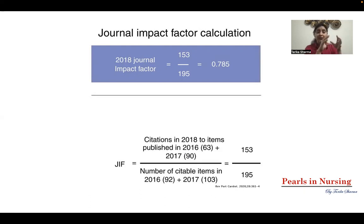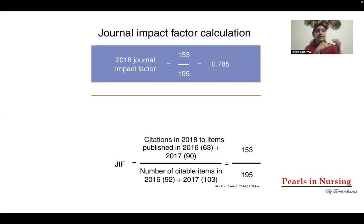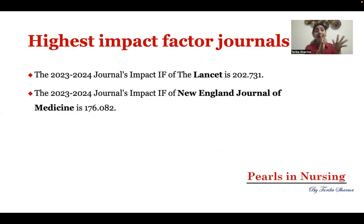When these tools are used to assess the JIF, they don't include certain types of articles like editorials or letters to editors; they calculate based on review articles or original articles. A journal with more than 10 impact factor is considered very high quality, and at least an impact factor of more than 3 is considered good. Thomas Reuter's impact factor is widely considered a reliable measure. In the medical field, the Lancet and New England Journal of Medicine are among the highest-ranked journals.